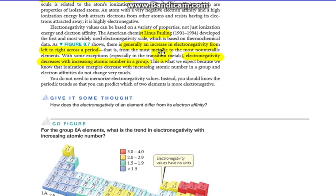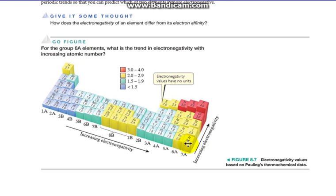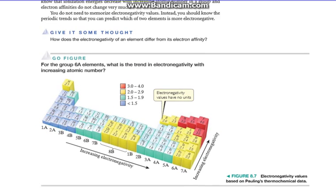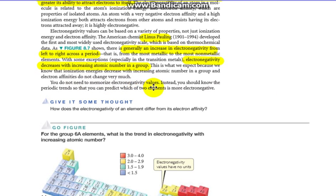Generally, an increase in electronegativity from left to right across a period, from the most metallic to the most non-metallic elements. And of course, there are some exceptions there, especially in the transition metals. Electronegativity decreases with increasing atomic number. So it gets smaller as we go down, or I like to think of it as it increases as we go up. Fluorine is the highest one at 4.0, and that makes cesium the smallest at 0.7. Now you don't need to memorize these values. Instead, you should know the periodic trends and be able to predict which of the two elements is more electronegative.